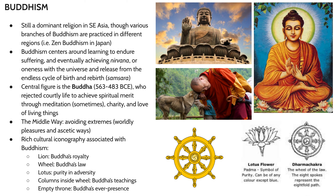He argued that ascetic ways — living a life of extreme contrition, putting your body through suffering — is not great, but at the same time, overindulging is not great either. He advocated for a middle ground. There are a lot of symbols associated with Buddhism that we'll see over and over in this unit, including the Buddha himself, and I'll be discussing specific canonized aspects of the Buddha that make him recognizable.